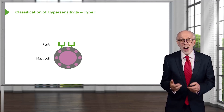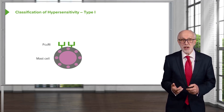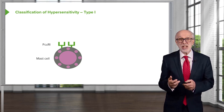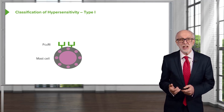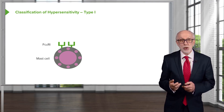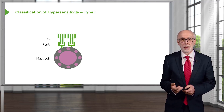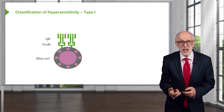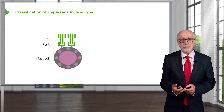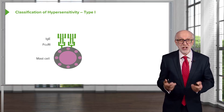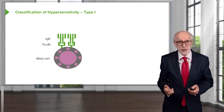Type 1 is IgE-mediated mast cell degranulation. On the surface of mast cells are FC receptors specific for the IgE class of antibody — the high affinity IgE receptor called FC epsilon R1. This binds IgE antibodies by the FC region of the antibody. We all have mast cells sitting in our tissues that have IgE on their cell surface, and it doesn't cause any problems at all.